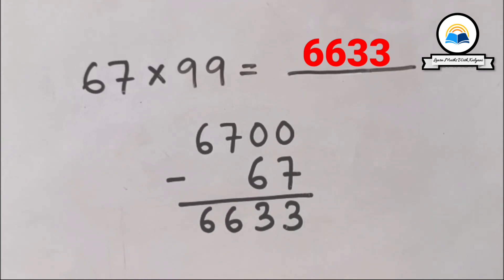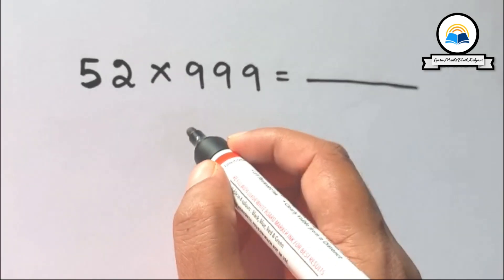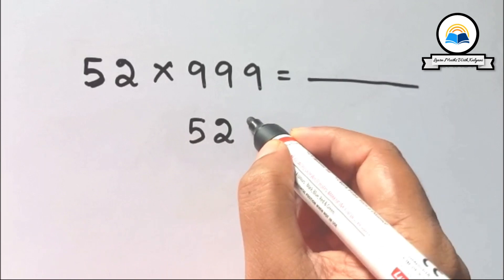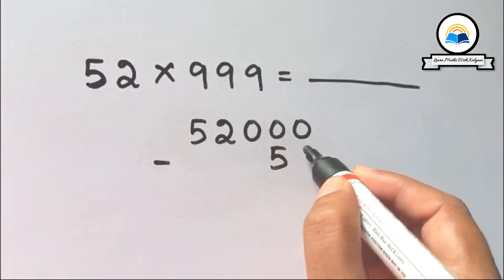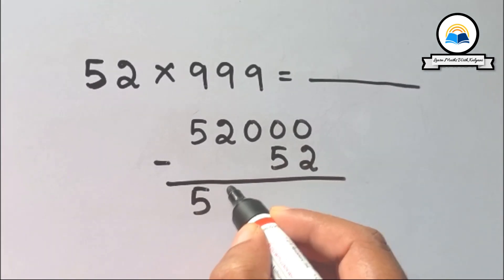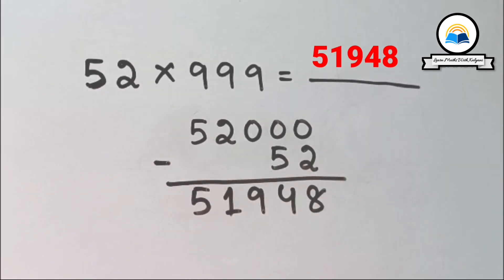52 times 999: 999 has three digits, so add three zeros and then subtract 52. 52,000 minus 52 equals 51,948. So the answer is 51,948.